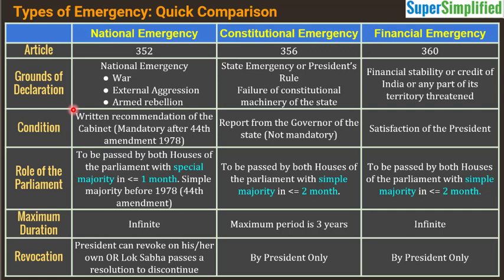But today such a situation cannot arise. A Cabinet meeting must be called, a written recommendation from the Cabinet must be obtained, that must be communicated to the President of India, and only then can he invoke national emergency. This is the important change that happened after the 44th Amendment of 1978.